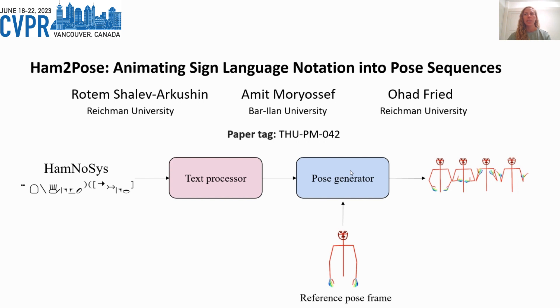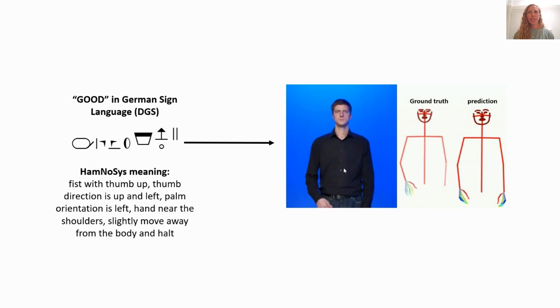The reference frame supplies the style of the generated pose. Using the reference, we can generate multiple sequences performed by the same signer and combine them into one long sequence. Here we can see an example for a HamNoSys notation for the sign 'good' in German sign language, with the corresponding ground truth sign and the predicted one. The notation means: make a fist with a thumb up, where the direction of the thumb is up and to the left, the palm orientation is left, and the hand is near the shoulders. Then slightly move it away from the body and hold it there for a moment.